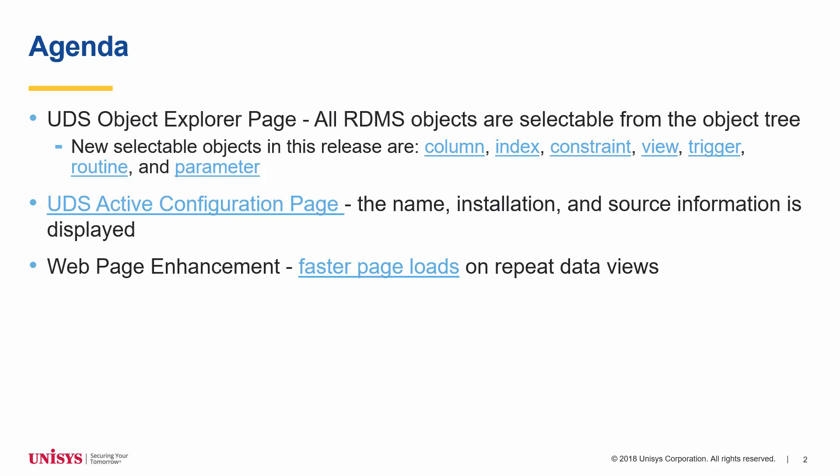On the UDS Active Configuration page, the name of the configuration, information relating to the installation of the configuration, and information relating to the source of the installation of the configuration is displayed. Additionally, information retrieved from the database agent is cached, leading to faster page loads when the information is requested again.